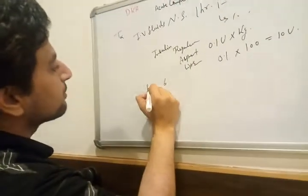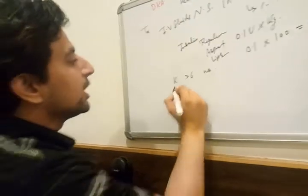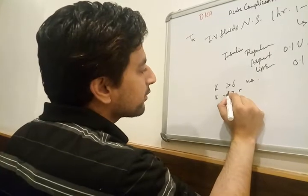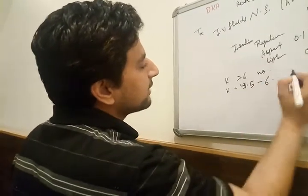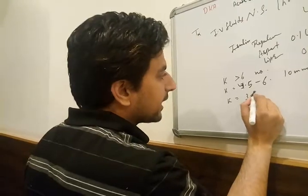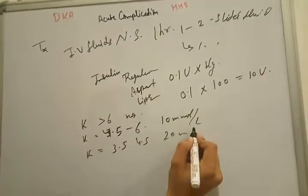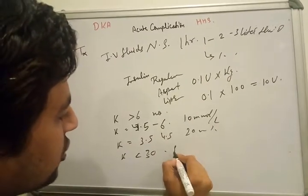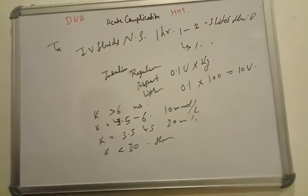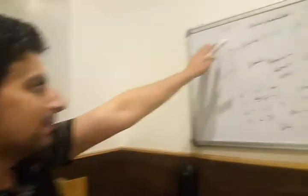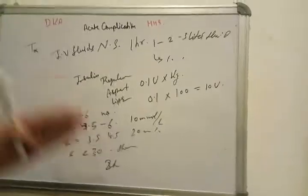For potassium management: if potassium is more than 6, no potassium replacement is needed. If potassium is 4.5 to 6, give 10 mmol/L. If potassium is 3.5 to 4.5, give 20 mmol/L of potassium chloride. If potassium is less than 3, stop insulin. Regarding acidosis — although one might think bicarbonate is needed, that is not the correct approach. The correct treatment is IV fluid balance, insulin, and electrolyte correction.